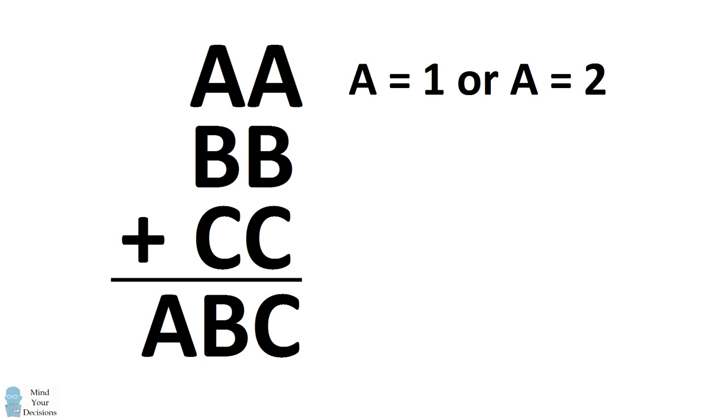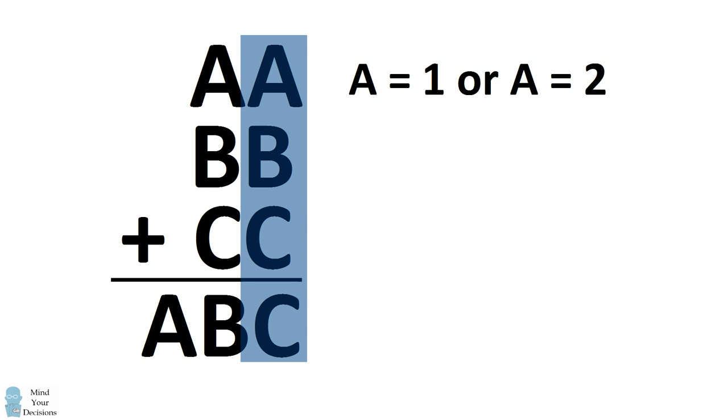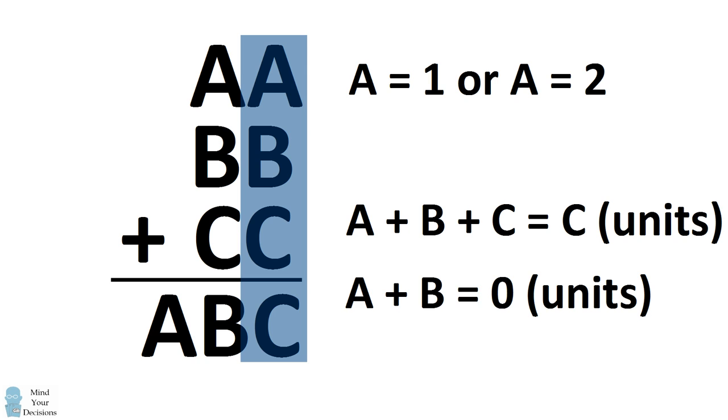Now let's focus on the value for B. Look at the numbers we're adding up in the Units column. We have A plus B plus C is equal to a result of C in the Units column. This can only happen if the values for A and B add up to something which has a Units digit of 0. In other words, A and B need to add up to 10.